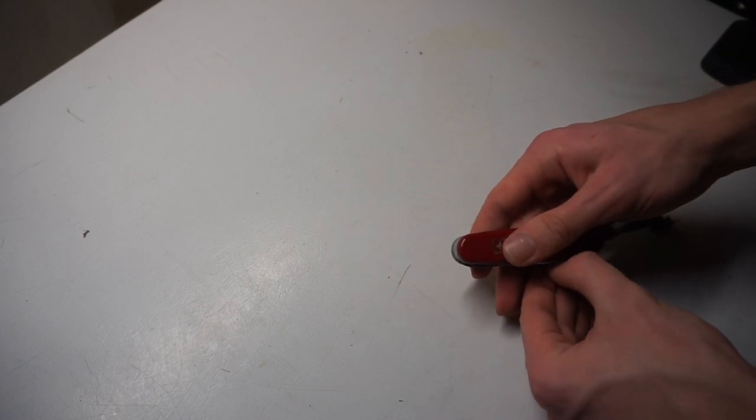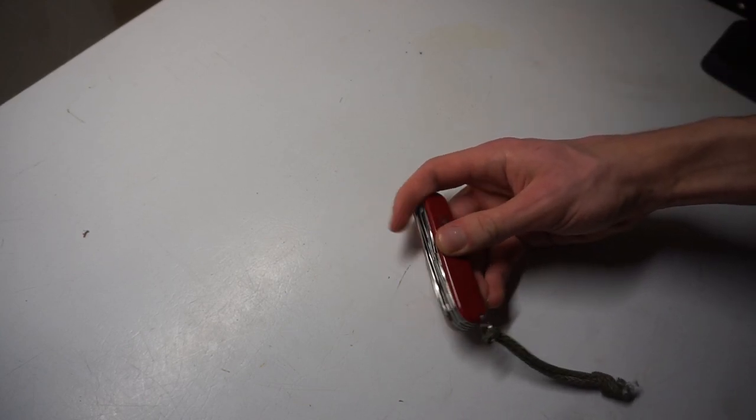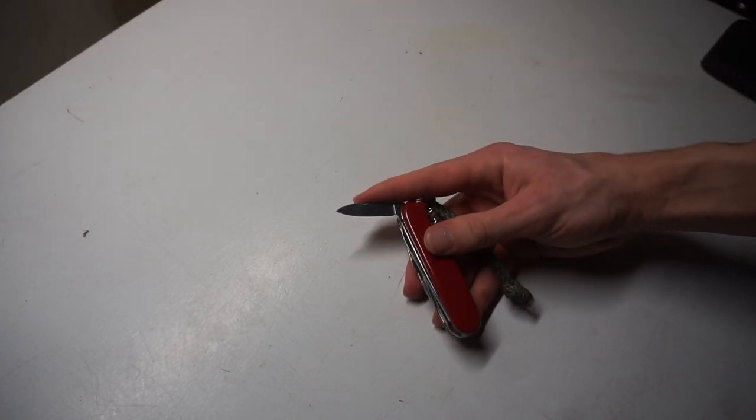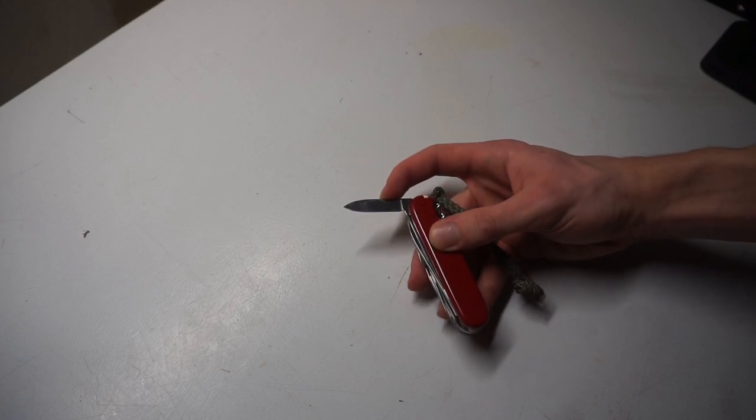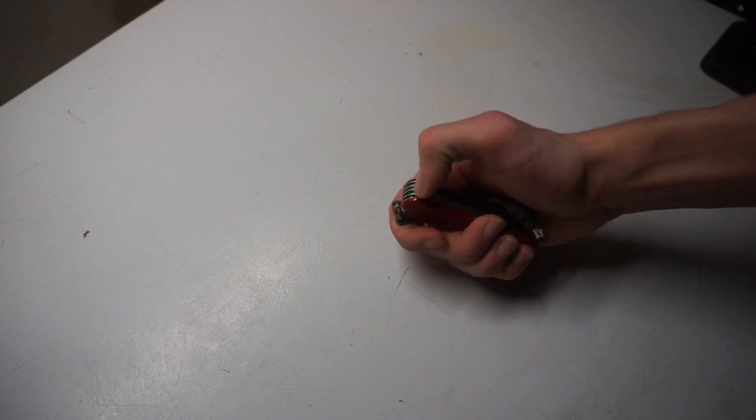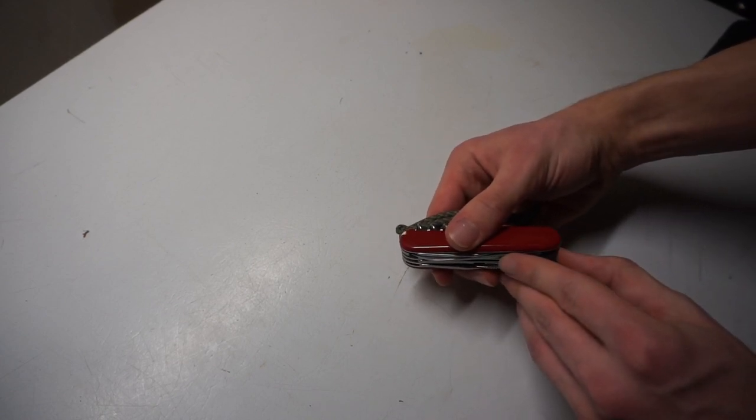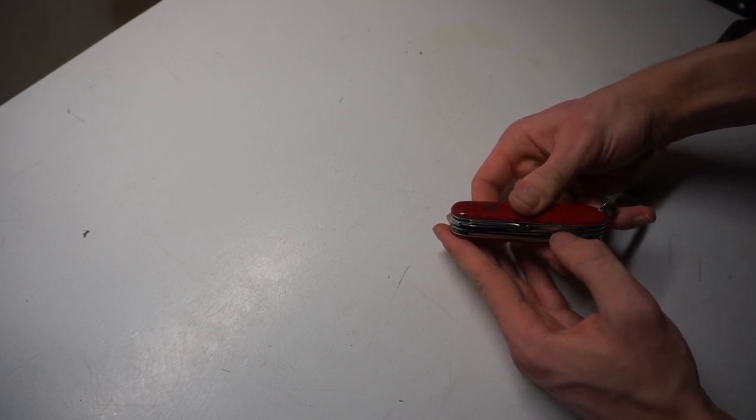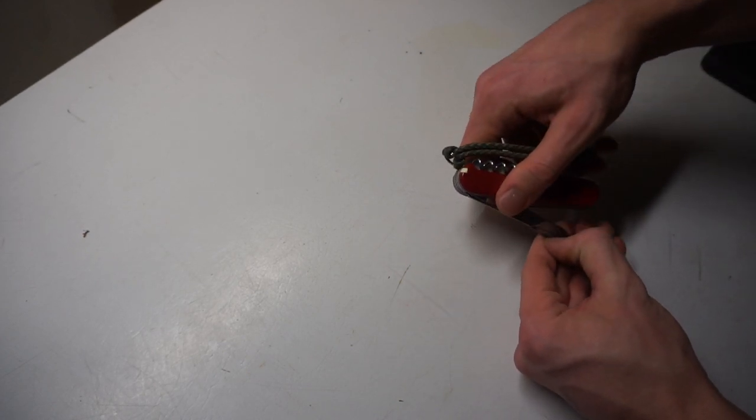So starting off, of course, it does have the main blade. It also has, if I can get to it, a little pen blade. And I do really love this little pen blade for smaller crafting projects. It also has a saw, and for the last few tools that I do like to use on this knife...